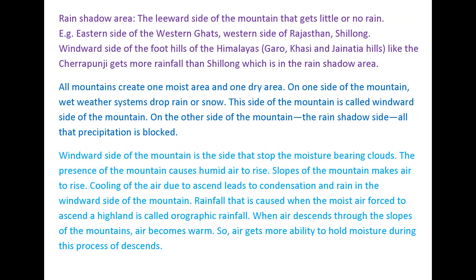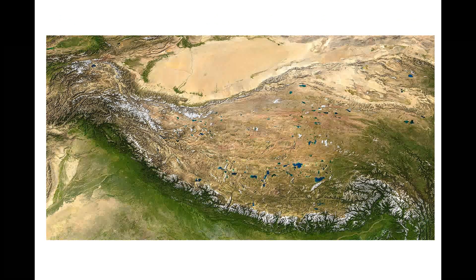The rain shadow region is the leeward side of the mountain that gets little or no rain. The Tibetan Plateau or Pamir Plateau is the best example of a rain shadow region. The Himalayas stop the moisture-bearing clouds, and the Pamir Plateau is practically a rainless region.